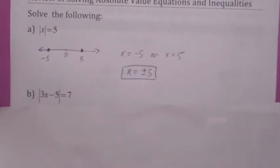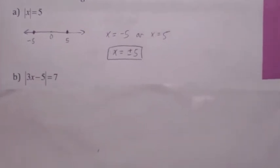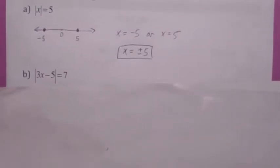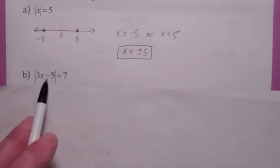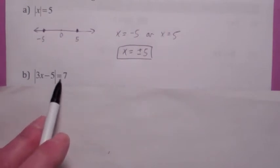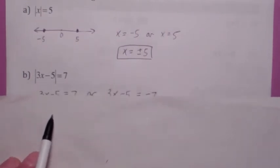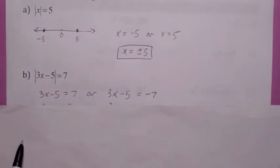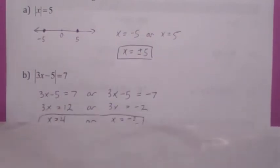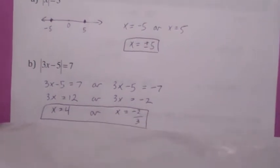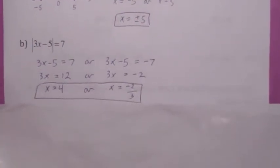In general, if you have the absolute value of an expression, then what's inside the absolute values has to either equal seven or negative seven. And that's exactly how you solve this absolute value equation. You break it up into two separate equations, solve each one separately. Add five, divide by three.